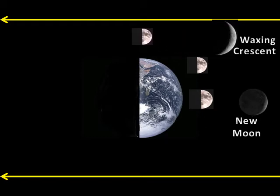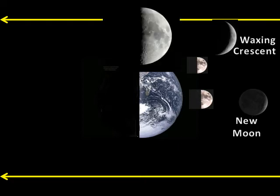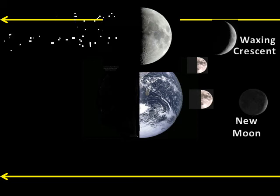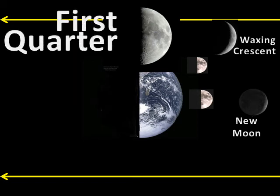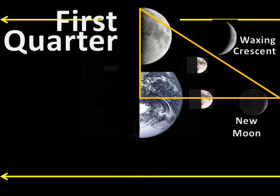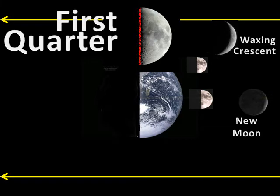As the moon moves on, it will eventually reach this point. This is one quarter of the way around the earth. This moon is called the first quarter. The first quarter occurs when the sun, earth, and moon are at right angles to each other. This moon can be identified by the straight line that can be drawn along one side of the moon.